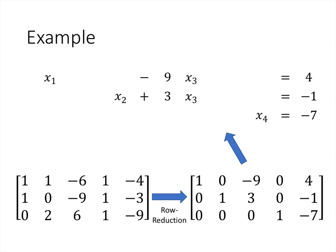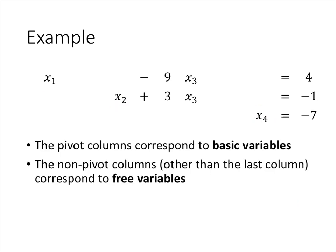When we look at the equations corresponding to the reduced row echelon form, notice a few things. We've got three pivots in columns 1, 2, and 4, and those correspond to the variables x1, x2, and x4 appearing in those equations. Since each pivot is the only nonzero number in its column, x1, x2, and x4 each appear only once across all equations. x3, since the third column is not a pivot column, can appear multiple times. We call the variables that correspond to pivot columns basic variables, and the variables corresponding to non-pivot columns — not counting the last column — we call those free variables. So here x1, x2, and x4 are basic variables, and x3 is a free variable.